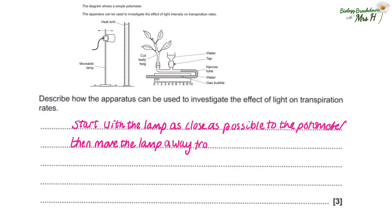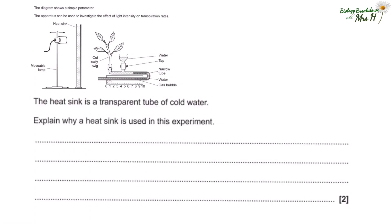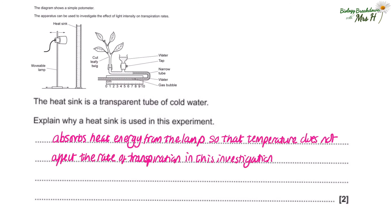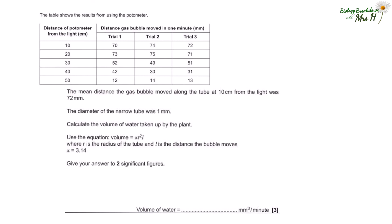Then move the lamp away from the potometer at set distances, and at each distance measure how far the bubble has moved in a set time. The heat sink is a transparent tube of cold water. Explain why a heat sink is used in this experiment. Well, I've actually already explained that, so let's just write the answer. It absorbs heat energy from the lamp so that temperature doesn't affect the rate of transpiration in this investigation, ensuring that light intensity remains the only independent variable. Temperature is a control variable.